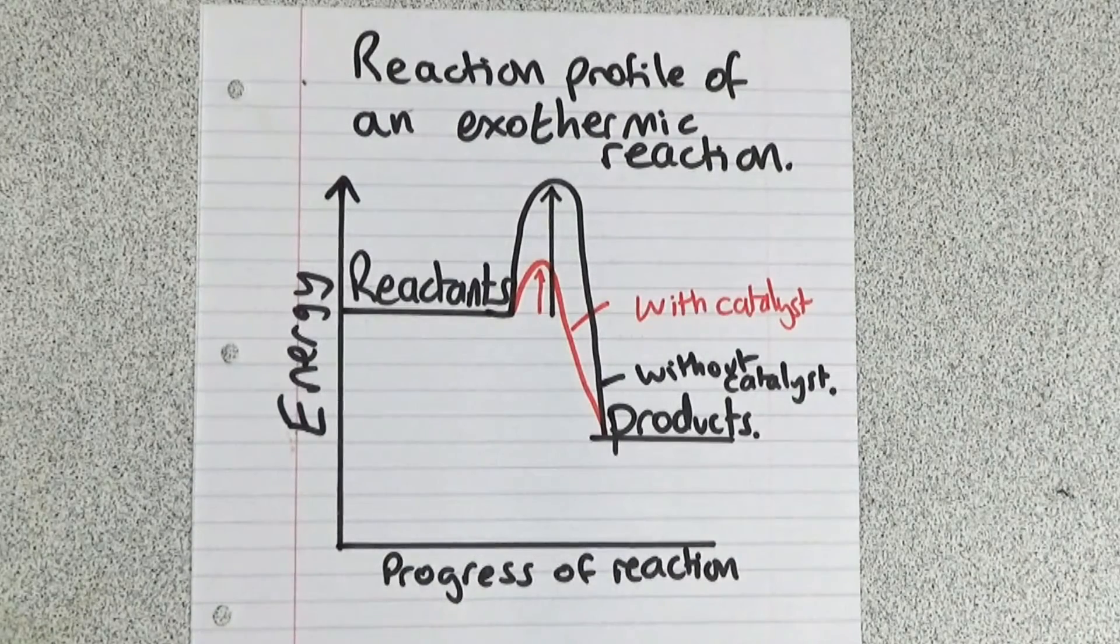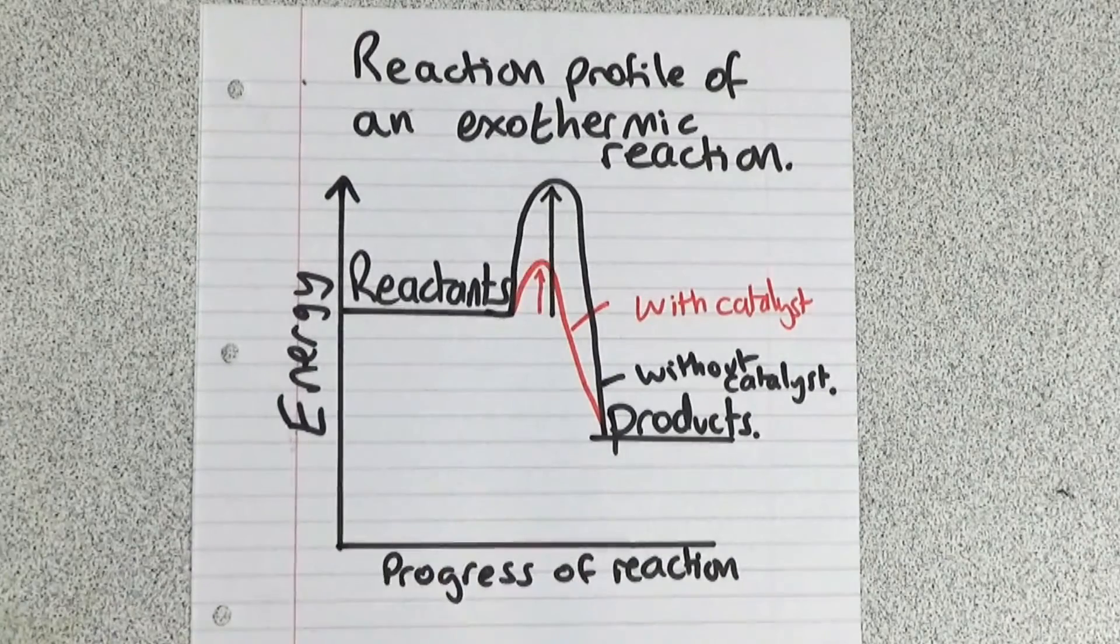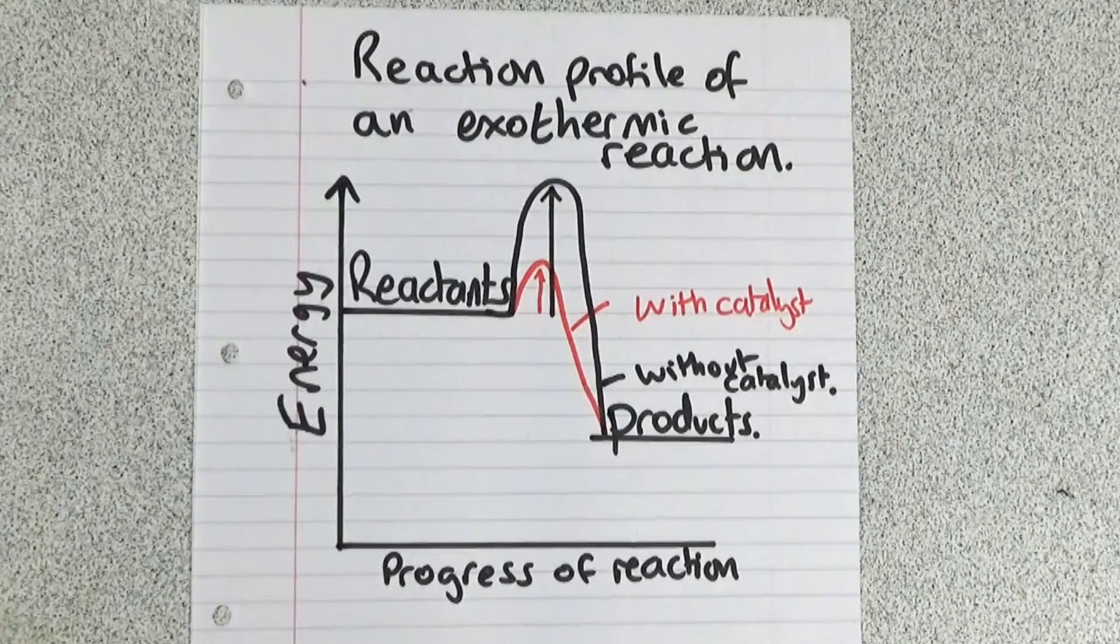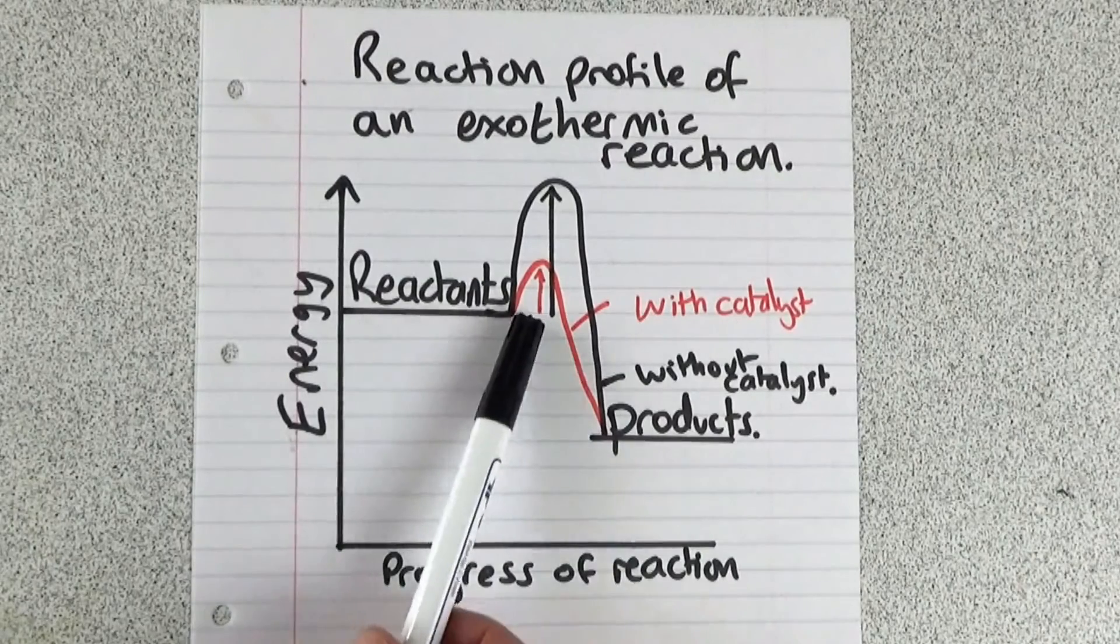Now I've also drawn on it the activation energy shown with the arrows. So the black arrow is the activation energy without a catalyst and the red arrow is the activation energy with the catalyst, and we can see the activation energy is lower using the catalyst.